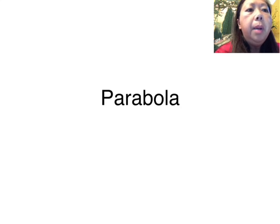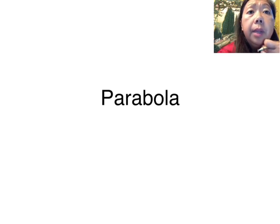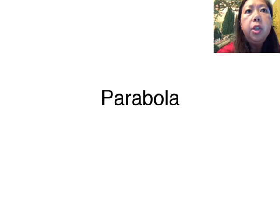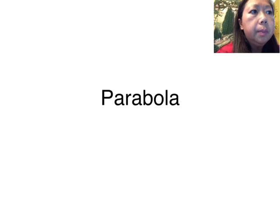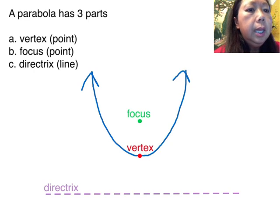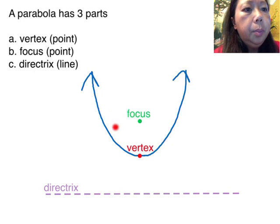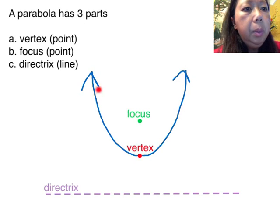Today is about learning about the parts of a parabola. A parabola is a curve that comes from a quadratic equation. So let's review its parts. This blue curve here is the parabola, and the parabola has three parts.